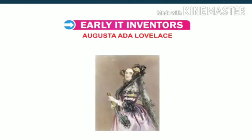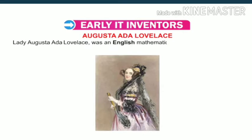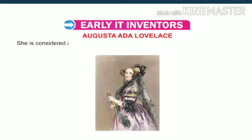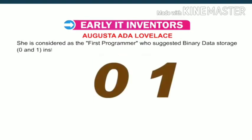Lady Augusta Ada Lovelace was an English mathematician and writer, chiefly known for her work on Charles Babbage's Analytical Engine. She is considered as the first programmer who suggested binary data storage — 0 and 1 — instead of decimal numbers.